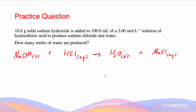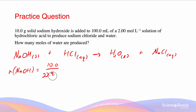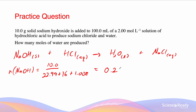The number of moles of sodium hydroxide can be calculated by dividing the mass, 10.0g, by the molar mass, which is 22.99 plus 16 plus 1.008. Calculating that gives us a value of 0.250 moles.